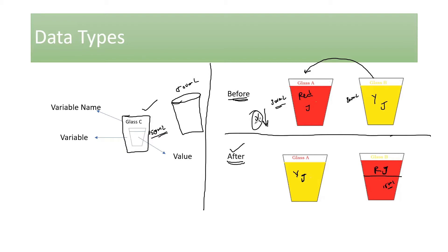That is where you need to understand a concept called data types. Data types are about understanding what value is coming in. If you remember the variable story we discussed — this is the variable, this is the variable name, and the content inside is the value. If you understand the value, you can properly plan your container. For a 300ml liquid, you find a glass that holds 300ml or more, so you don't lose any content.